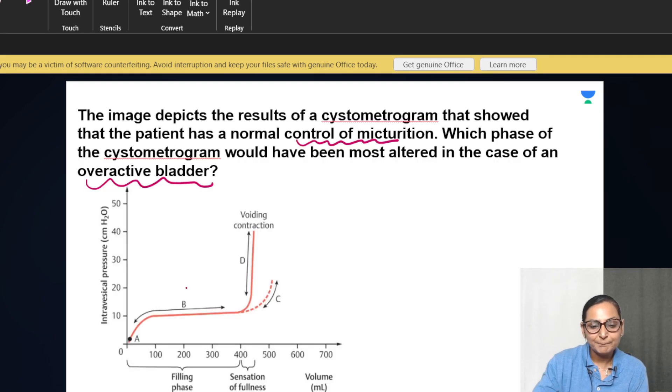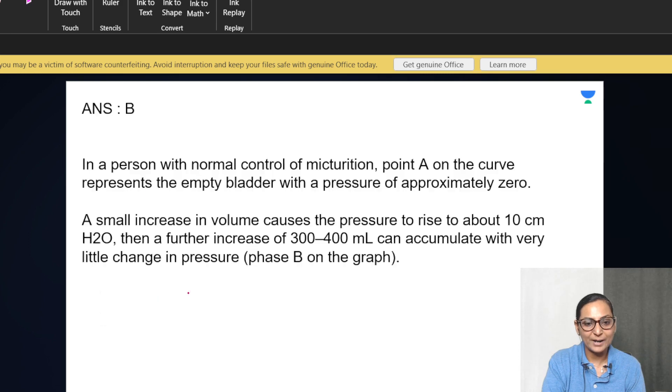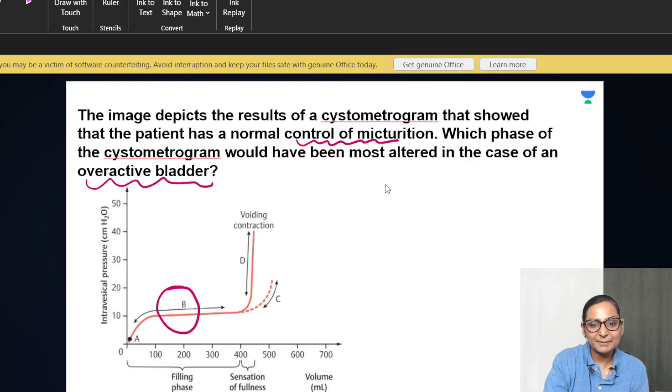This is the recording of a normal cystometrogram. The answer is B, the plateau phase. First, we'll look at the explanation of this MCQ before I teach you what cystometrogram is. In a person with normal control of micturition, point A represents the empty bladder with a pressure of approximately zero.